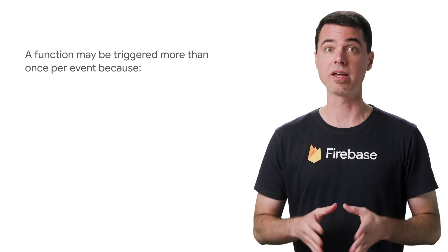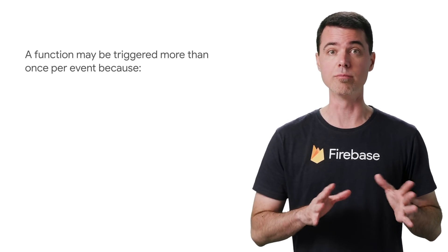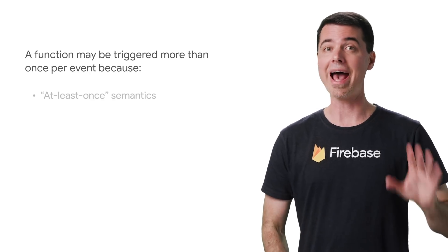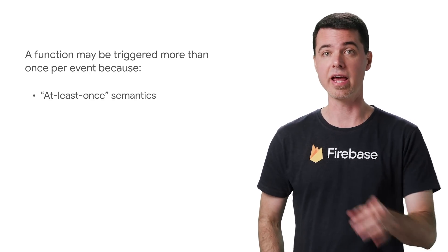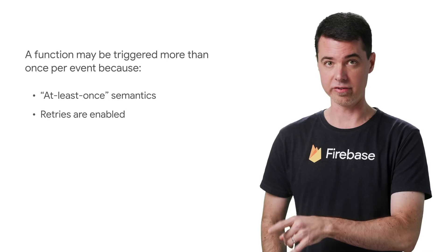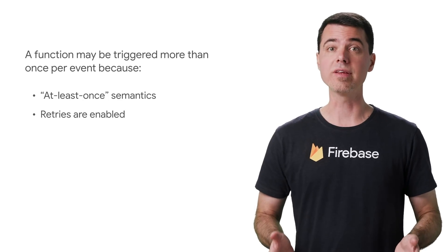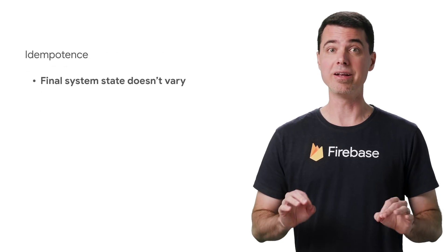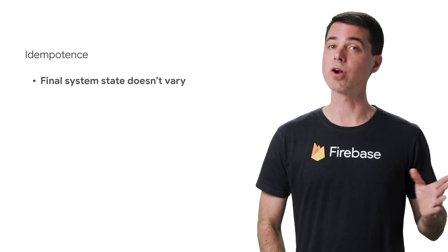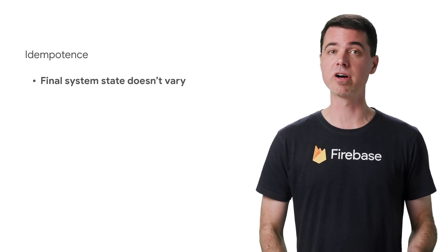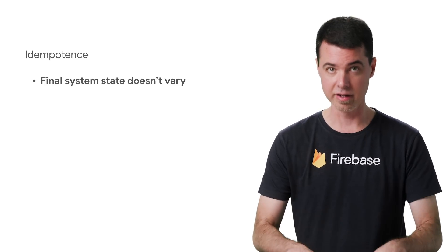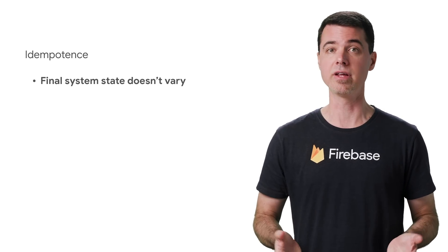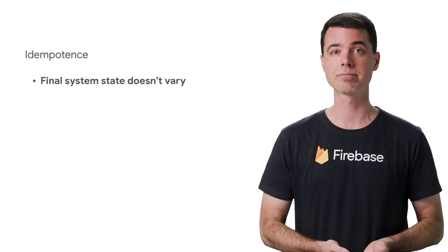So we have two things that can cause a background function to get executed more than once per unique event: the general at-least-once delivery semantics, and retries on error. In order to handle these cases correctly, your function code should be idempotent. That means no matter how many times your function is triggered for a single event, the final state of your system should not be any different than if it was triggered just once.